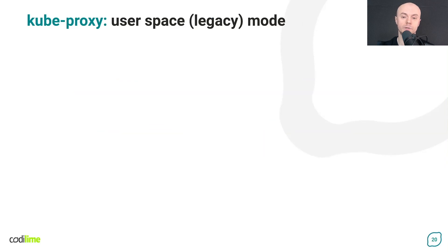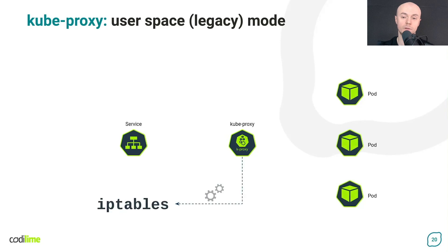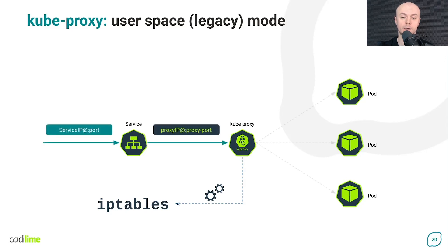The third mode that kube-proxy can operate in is called user space — this is a legacy mode. When kube-proxy is configured to work in this mode, it does the following: it watches the Kubernetes control plane for the addition and removal of service and endpoint objects. After a new service has been added, kube-proxy opens a randomly chosen port — this is called the proxy port. Next, kube-proxy installs rules in iptables to configure redirection of the virtual service IP and port to this proxy port. When clients connect to the service virtual IP address, the packets are redirected to the proxy port. Then kube-proxy chooses the service backend pod via a round-robin algorithm by default and starts proxying traffic from the client to the backend.